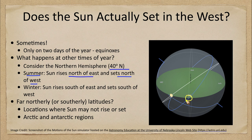On the summer solstice, the Sun will actually set much further north of west. It does not rise directly in the east or set directly in the west on this day. It will actually rise to the north of east and set to the north of west, giving it a very long path in the sky — and we see that in the summer when the Sun is up for a very long period of time.